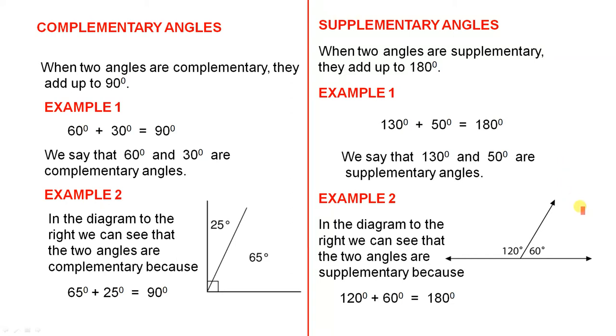Example 2. In the diagram to the right, we can see that the two angles are supplementary because 120 degrees plus 60 degrees equals 180 degrees. That is, they form a straight line.